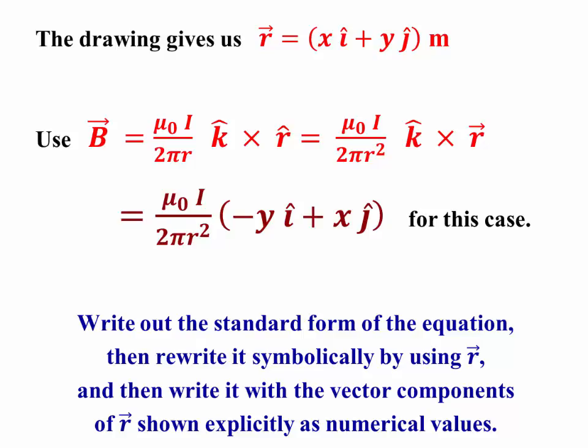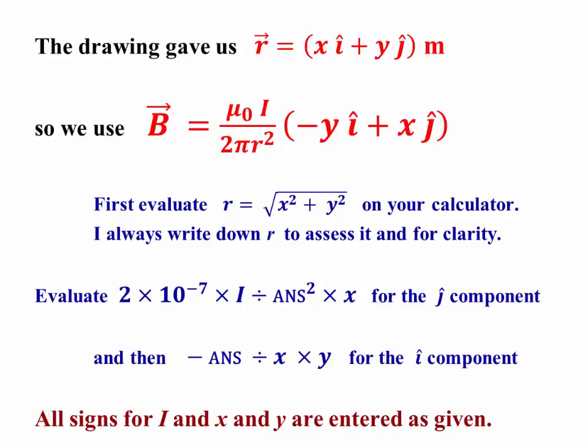Always start with the standard form of the equation, rewrite it symbolically, fill in the vector components for r, and compute. The computing step is like we've done before. Find the magnitude of r from the square root of x squared plus y squared. Write it down just for safety and clarity. And then mu naught over 2 pi, 2 times 10 to the minus 7 times the current divided by r squared times x will give me the j hat component. When you do that, be sure you write it down in the right place in your vector expression. Then I can take my answer from that step, multiply it by negative y, and divide by x. An easy way to do that is you change sign of your answer, divide by x, multiply by y. That's then the x component. Once again, any signs for the current for x component or y component are entered into this expression when you do the calculation.